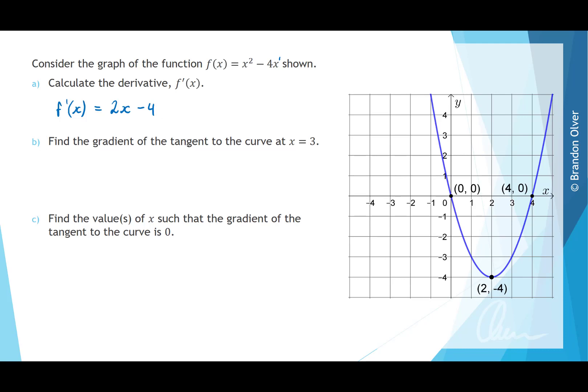Next we want to find the gradient of the tangent to the curve at x = 3. So to do that we just evaluate the derivative f'(3). So substituting that in we have 2 times 3 minus 4, and 2 times 3 is 6, and subtracting 4 is going to equal 2. So that's the gradient.